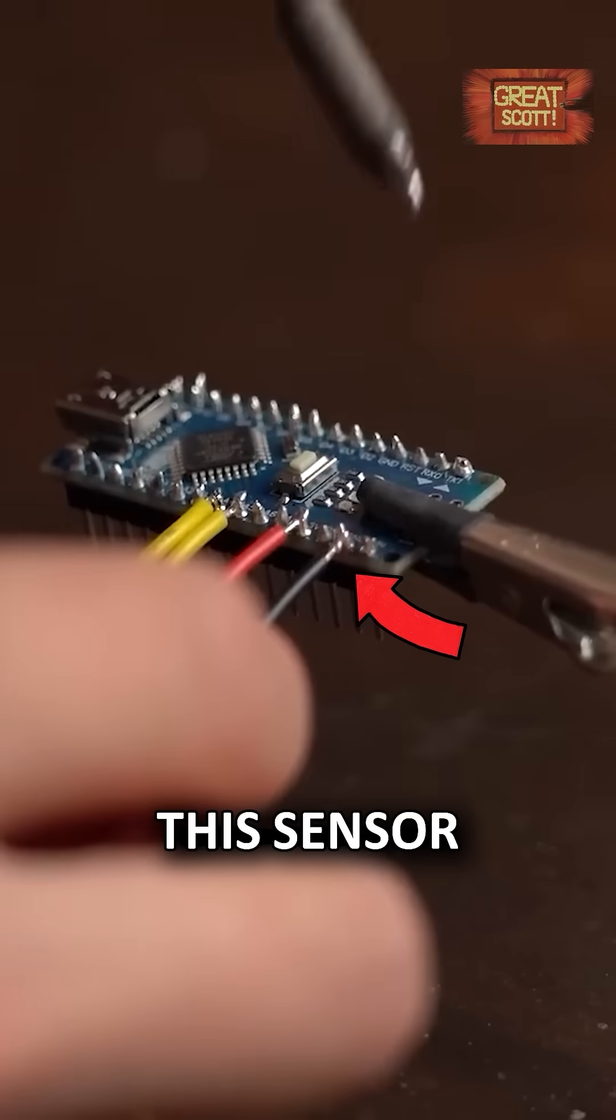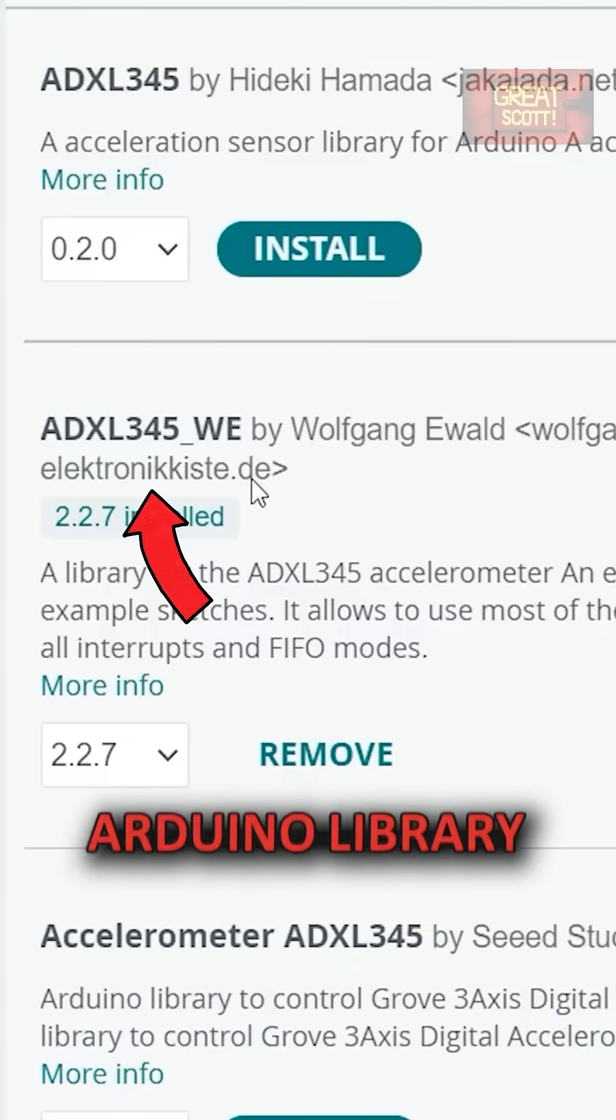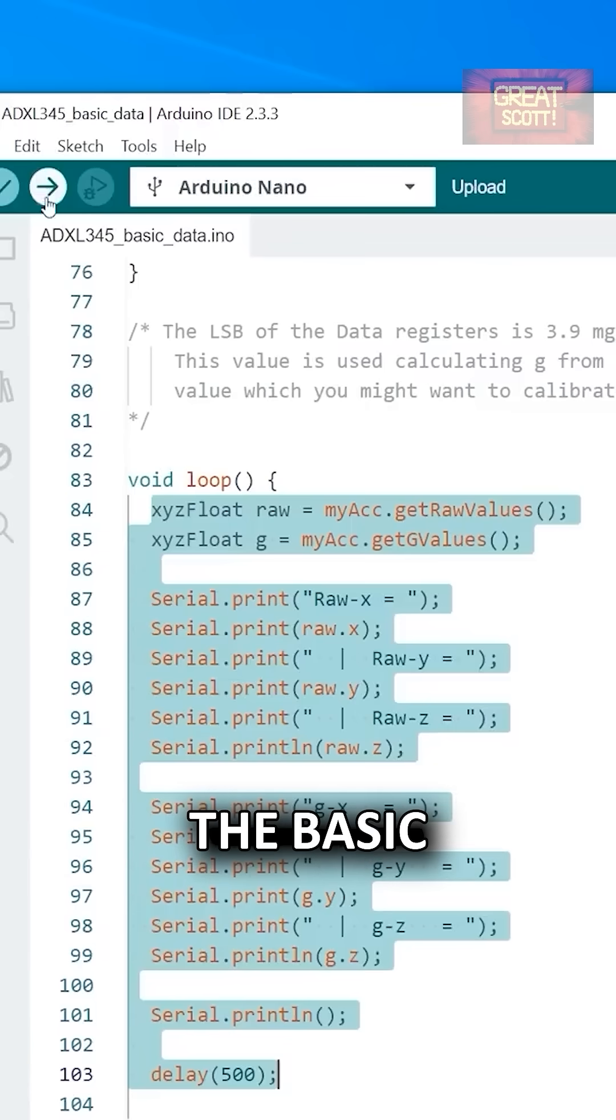Let's simply connect the sensor to an Arduino using the I2C interface and use this Arduino library to show off the basic functionality.